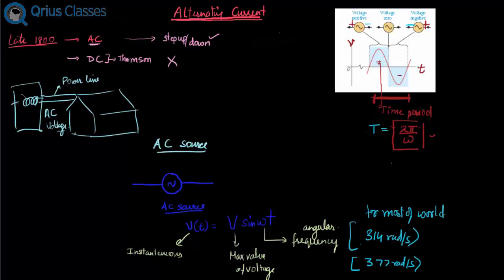In other words, the frequency of rotation, which is 1 by T, equals Omega by 2π. This value for most of the world is 50 Hertz—that means the signal fluctuates 50 times per second—while for US it fluctuates 60 times per second.